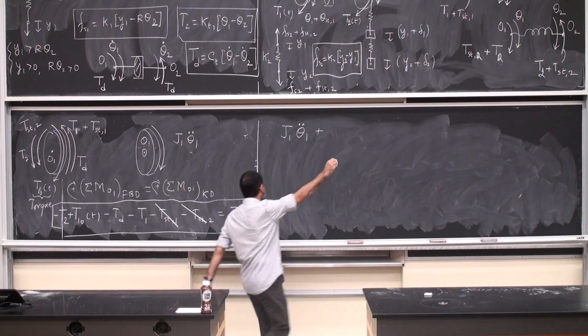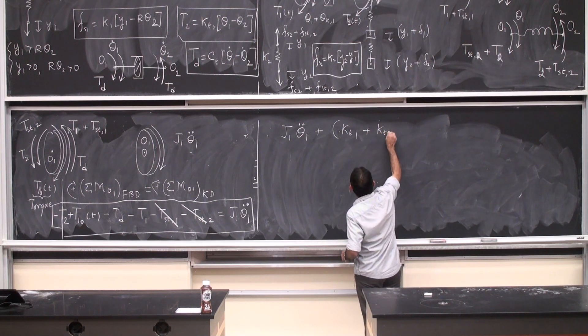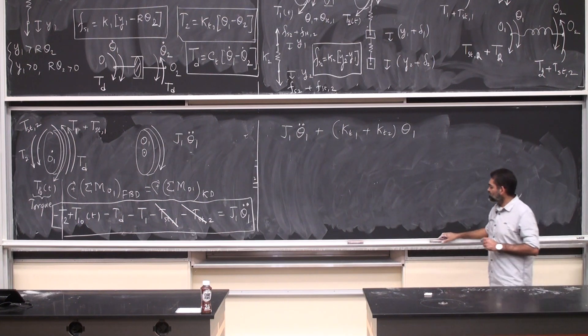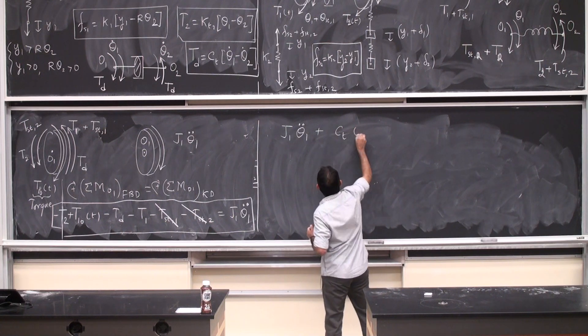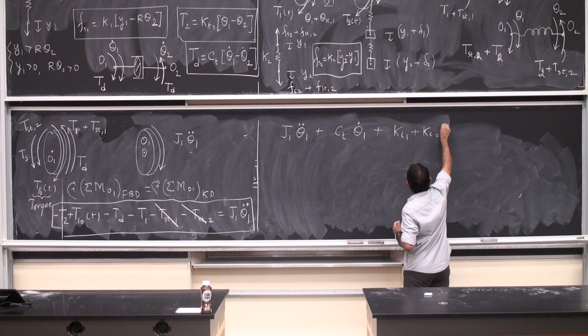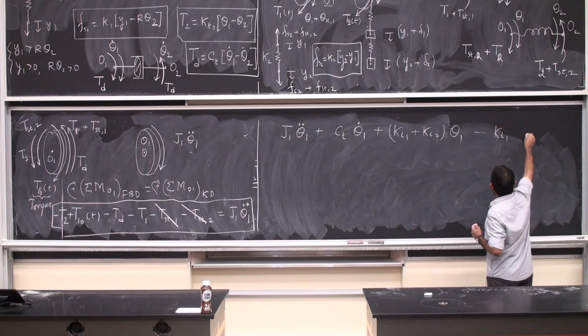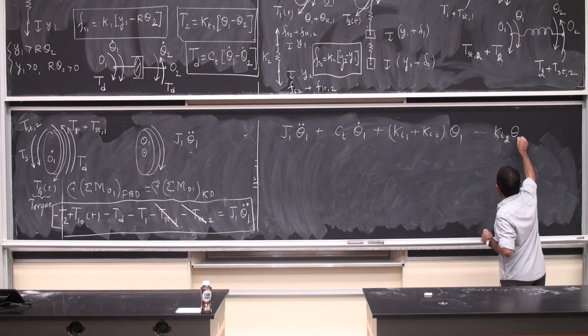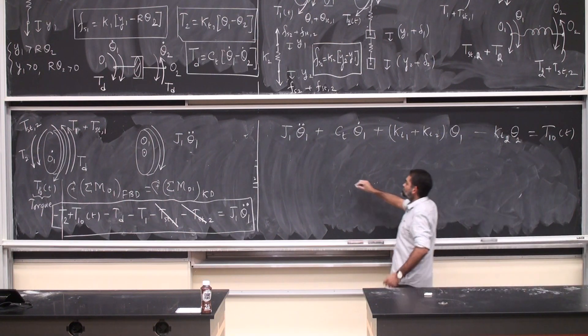All right, so J1 theta 1 double dot, A t1, A t2, theta 1. Damping element comes typically first in the order of things, so let me write that out first. So C t theta 1 dot, theta 1, k t1 times, k t2 times theta 2 is t1, equals zero.